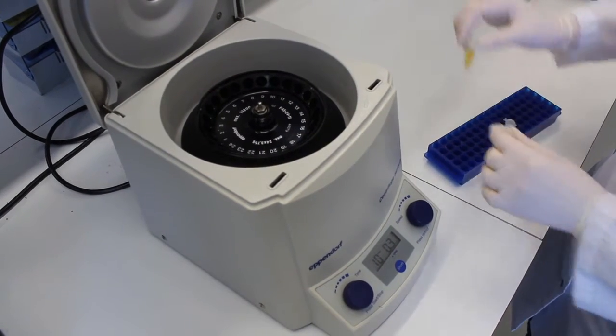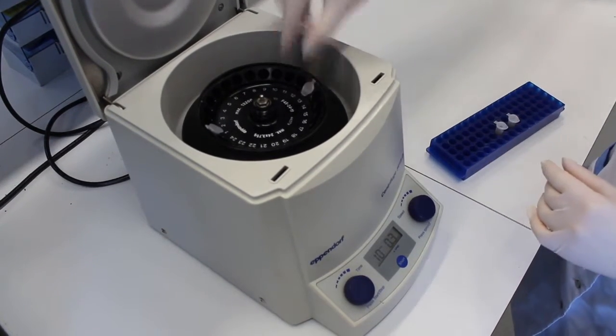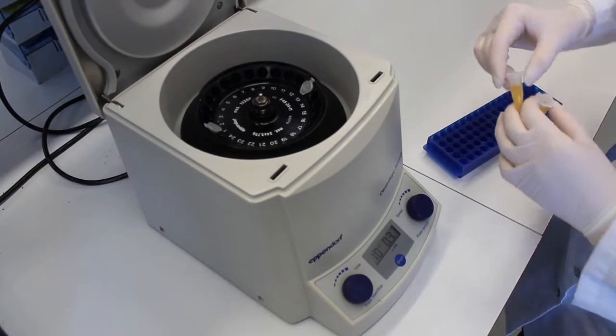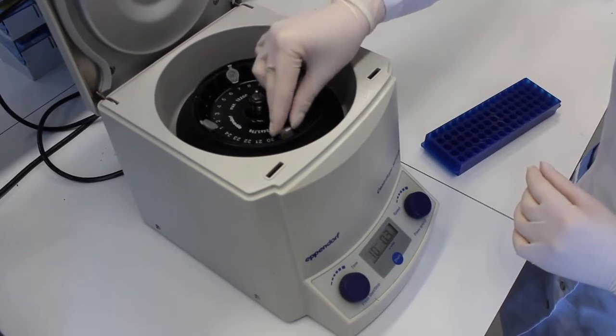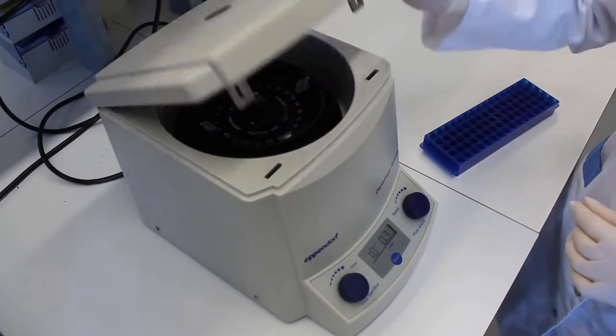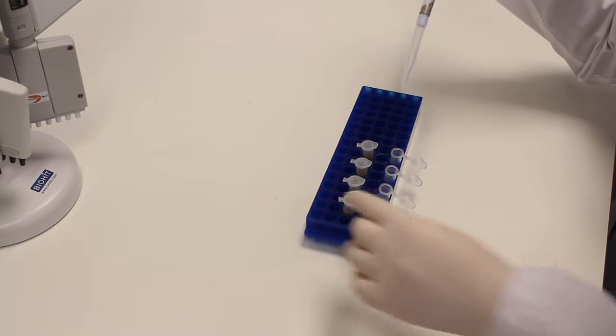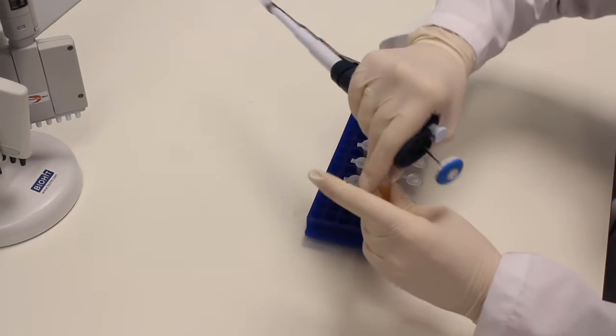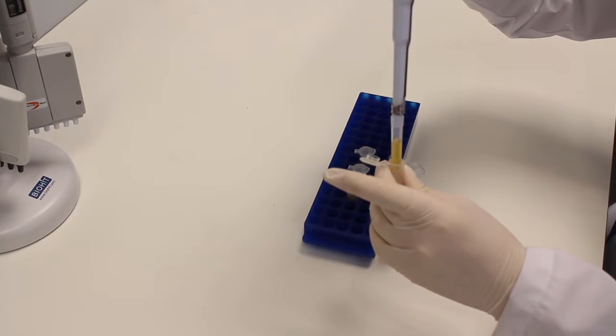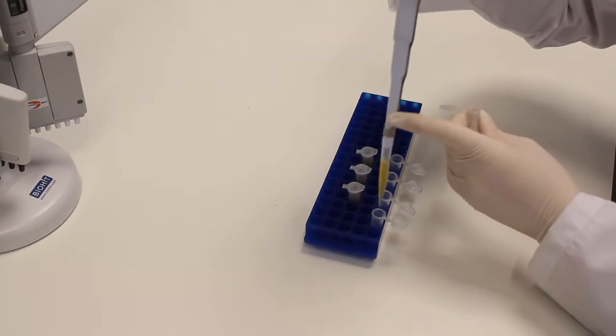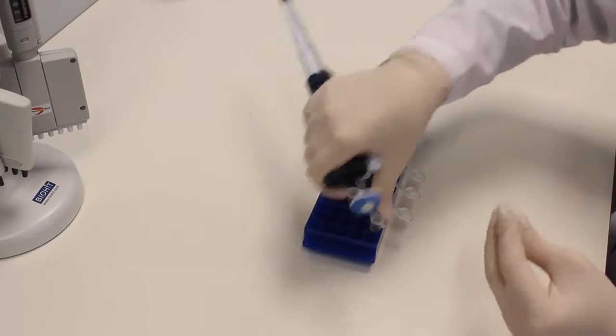Prepare your samples by three centrifugation steps. First one, 10 minutes at 300G. Second one, 20 minutes at 1200G. And third one, 30 minutes at 10,000G. After each step, transfer the supernatant into a new tube and discard the pellet.